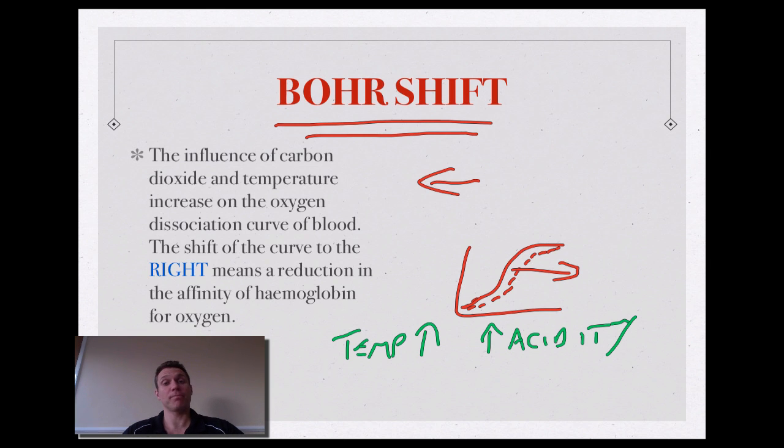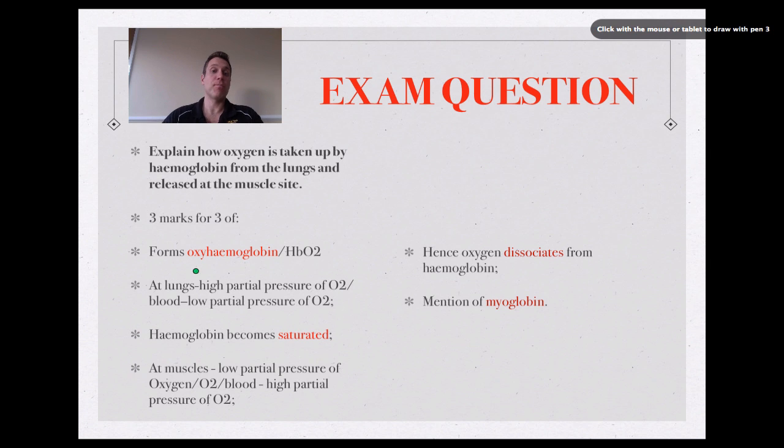Then the exam question I've chosen: Explain how oxygen is taken up by hemoglobin from the lungs and released at the muscle site. So we've got taken up and then we've got released—two parts we might want to talk about. The reason I picked this question is it's linked to our gaseous exchange that we've done before and diffusion. So note the high partial pressure at the lungs to low partial pressure.